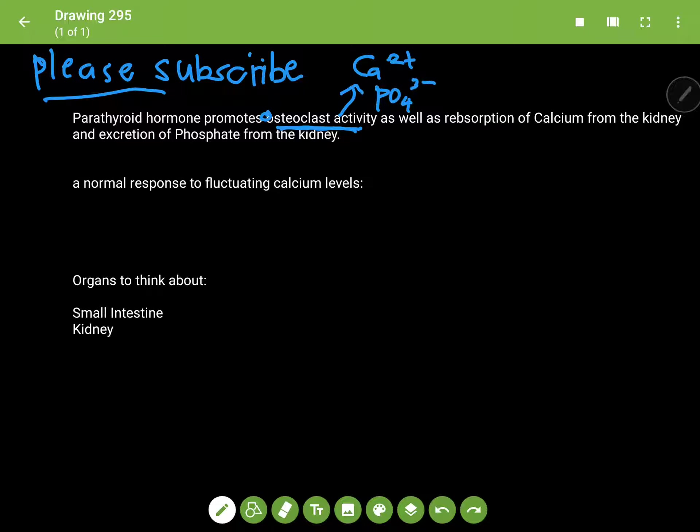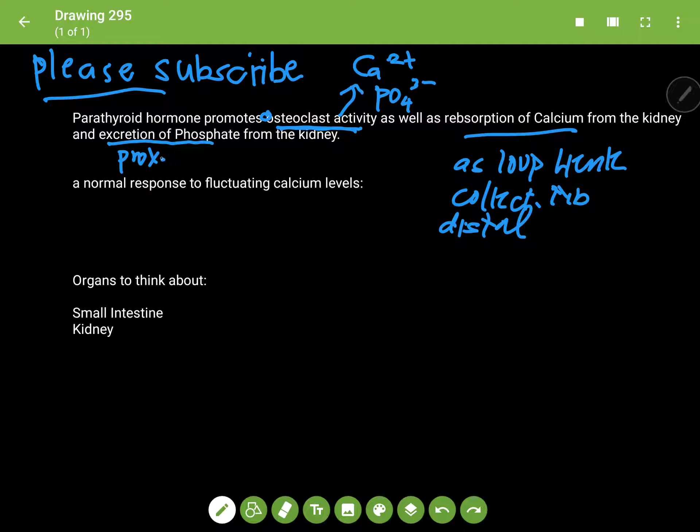It also promotes reabsorption of calcium, and this is at the ascending loop of Henle, the collecting tubule, and the distal tubule. So it promotes reabsorption of calcium so that it goes back into the blood and not out into the urine. And it promotes excretion of phosphate from the proximal tubule.